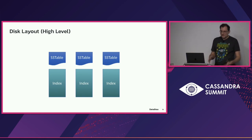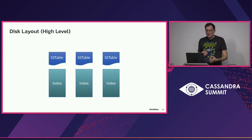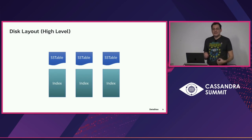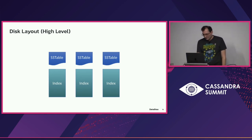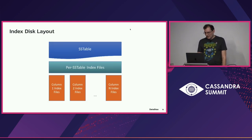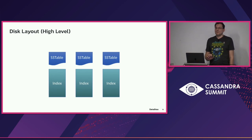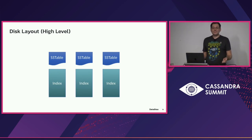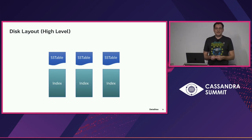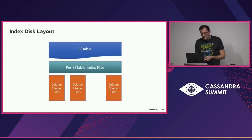Physically in the database, each SS table and each memtable has an associated index containing just the data inserted into that SS table or memtable. These are not global indexes — they are local to SS tables or memtables. This makes it very easy to keep data consistent because indexes have the same lifecycle as SS tables. Whenever Cassandra flushes a new SS table, it builds an index for it. The index is immutable like the SS table itself. When the SS table gets compacted and eventually deleted, the index is deleted as well.